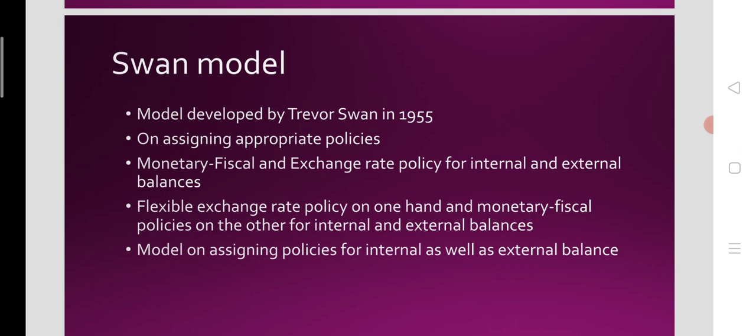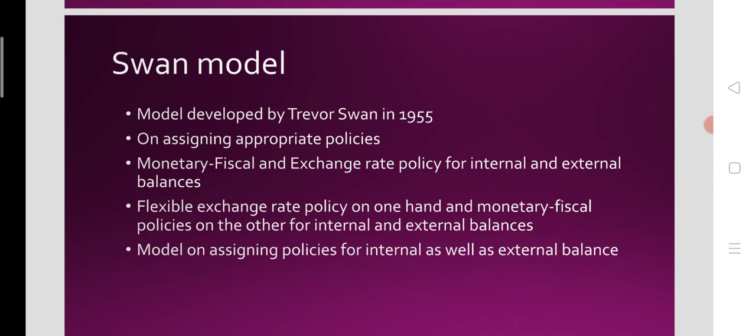External balance refers to BOP equilibrium over a period of time — there could be no trade deficit and no trade surplus. According to Trevor Swan, a monetary-fiscal policy mix will be applied for internal balance, and foreign exchange rate policy — regarding devaluation or revaluation — for external balance. This is the kind of recommendation made by Trevor Swan for achieving internal balance and external balance.